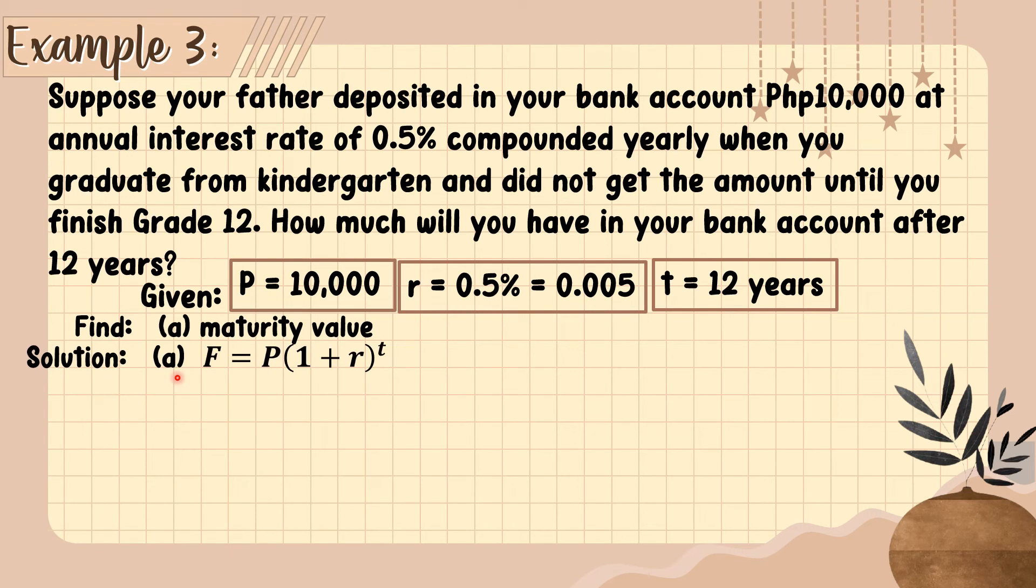The solution: we are going to use the formula F equals P times the quantity 1 plus r raised to t. Let's substitute the values. P is 10,000, rate is 0.005, and time is 12.